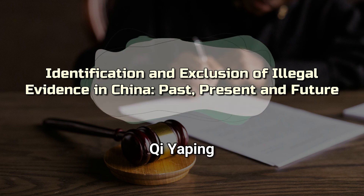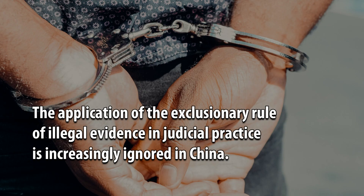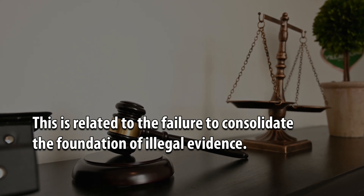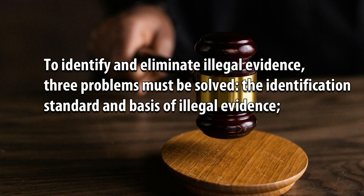Identification and Exclusion of Illegal Evidence in China: Past, Present and Future, by QI Yapping. The application of the exclusionary rule of illegal evidence in judicial practice is increasingly ignored in China. This is related to the failure to consolidate the foundation of illegal evidence. To identify and eliminate illegal evidence, three problems must be solved.